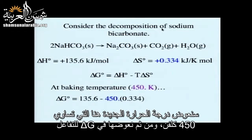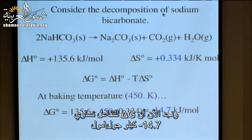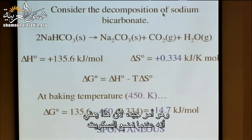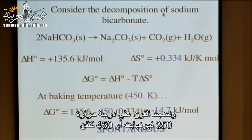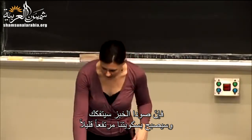At baking temperature of 450 K (350°F), plugging into our delta G equation gives us delta G equals negative 14.7 kilojoules per mole. In this case we are dealing with a spontaneous reaction, which means the baking soda will decompose and we'll get our cookies to rise.